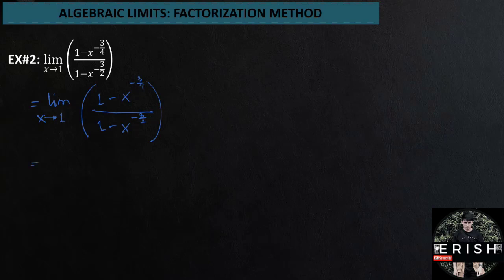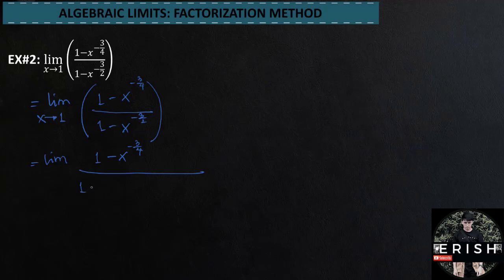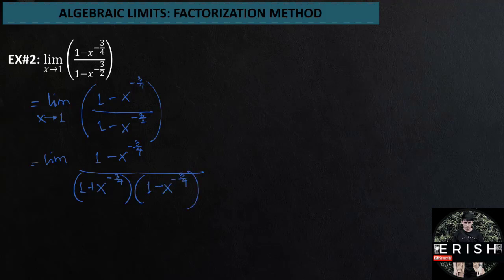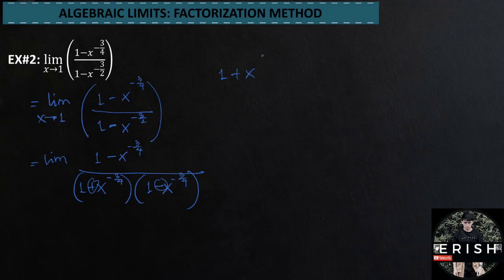Let's continue the problem. Limit of 1 minus x raised to negative 3 over 4, over 1 minus x raised to negative 3 over 2 as x approaches 1, equals — what we will factorize is the denominator. The factors will be: 1 minus x raised to negative 3 fourths, over 1 plus x raised to negative 3 over 4 times 1 minus x raised to negative 3 over 4.